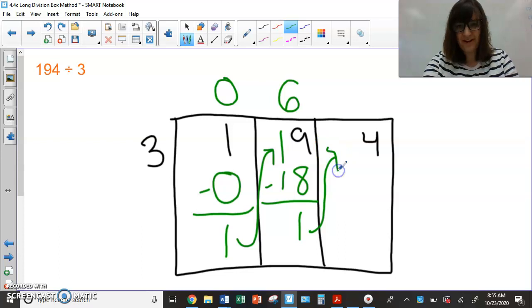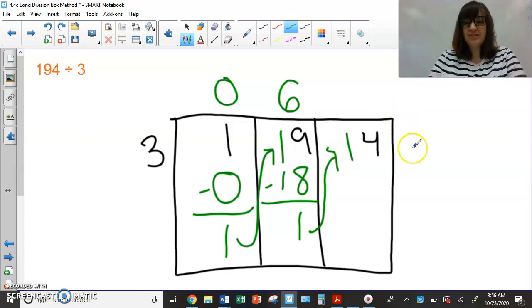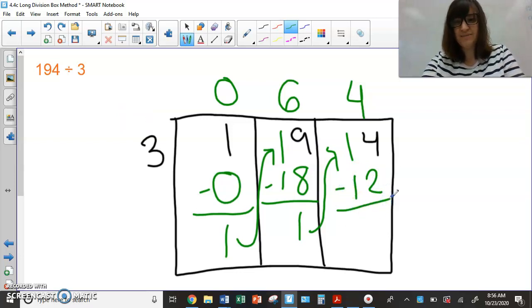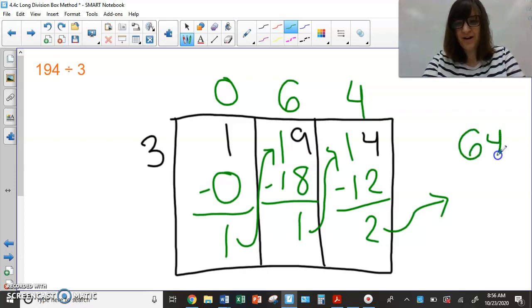My one is going to take a trip right here. So now I have three going into 14. How many times can I go in? Let's count. Three, six, nine, 12, 15. Too big. There's not a 12. Even though 15 is closer to 14 than 12, because it's too big, it can't go in that many times. There's not enough. So three goes into 14 four times. Four times three is 12. That's what we stopped counting at. So 14 minus 12 is two. My two is going to take a trip. And now I'm going to get 64. My two came out, which means that's my remainder of two.